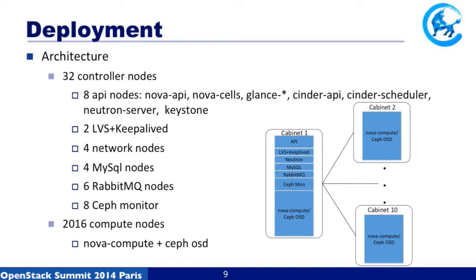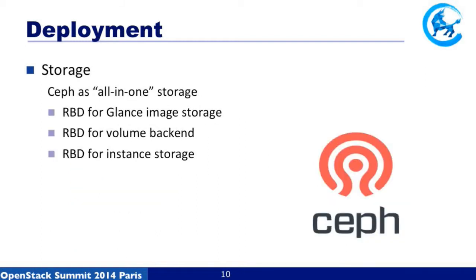For our two thousand compute nodes, we use 32 nodes as controller nodes. There are API nodes, LVS nodes, network nodes, MySQL database nodes, RabbitMQ queue nodes, and monitoring nodes — all deployed with clustering for high availability. The remaining nodes are normal compute nodes deployed as Ceph OSD. We use Ceph as an all-in-one storage solution for Glance image storage, volume backend, and instance storage.